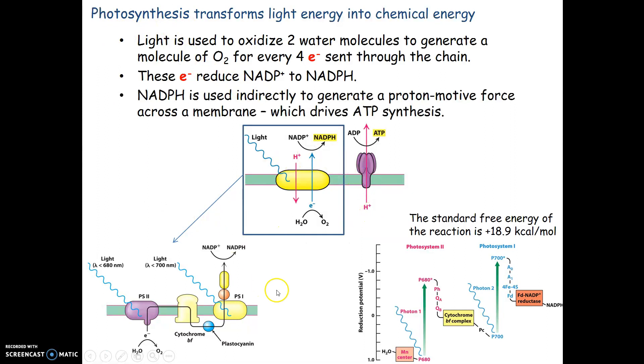If you've heard of a Z-scheme, these are the reactions occurring in photosynthesis light reactions. Light is used to oxidize two water molecules to generate a molecule of O2 for every four electrons sent through the chain. O2 has two oxygens, so we get those from two waters, and in that process we lose two electrons from each water.